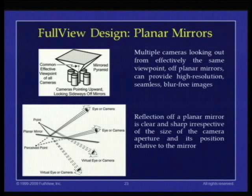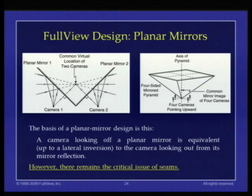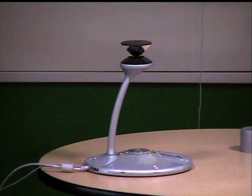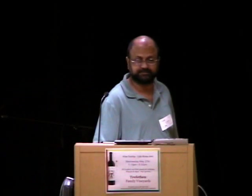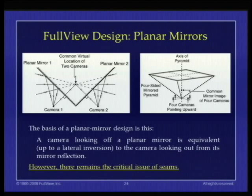FullView's design — as illustrated and lying on the table — is basically a bunch of flat mirrors. The beauty of a flat mirror is that no matter how large the aperture, or where the aperture is relative to the mirror, everything always looks clear. So if you have two mirrors and two cameras, you can arrange the cameras such that each camera is looking from the center of the arrangement. The basis of all our designs is this: when a camera looks off a mirror, it is as if the camera is looking out into the world from its mirror reflection. That's all we use, again and again in different ways. It's not ray tracing — it's just that the camera is at its mirror reflection, and we go from there.